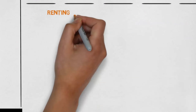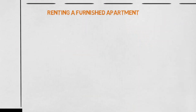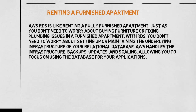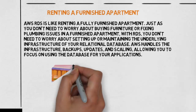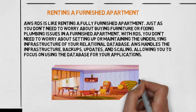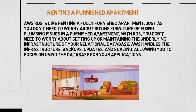Here are a few examples to help understand AWS RDS. Renting a furnished apartment: AWS RDS is like renting a fully furnished apartment. Just as you don't need to worry about buying furniture or fixing plumbing issues in a furnished apartment, with RDS you don't need to worry about setting up or maintaining the underlying infrastructure of your relational database. AWS handles the infrastructure, backups, updates, and scaling, allowing you to focus on using the database for your applications.